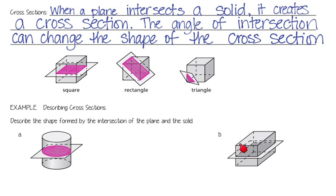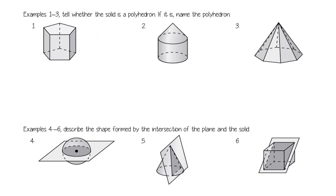Over here, we have a rectangular prism, and that rectangular prism has been sliced by a plane that is parallel to the bases. So therefore, its slice, its cross section, will look just like one of the bases, which is a rectangle.